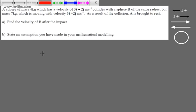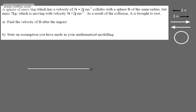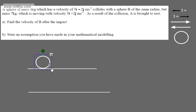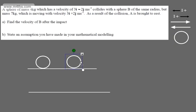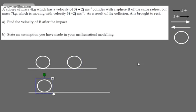The assumption we're going to make is that these are particles. So let's go ahead and model these up. We'll have a before and an after shot, as we've seen in previous videos. So we have A and B in the before shot, and then A and B in the after shot — writing on 'before' and 'after'.